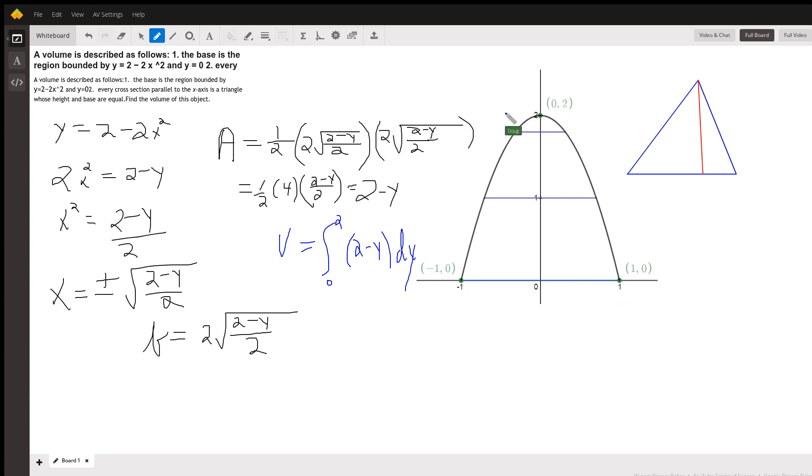Here we're visualizing a top view of this solid. If we visualize a side view, one of the cross-sections, like this base would be 2, so this height would be 2.